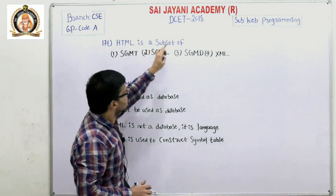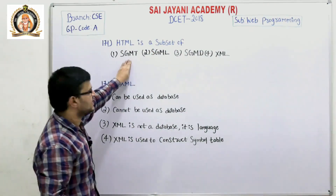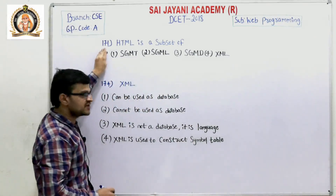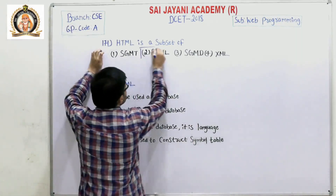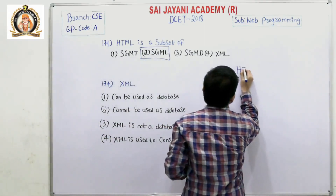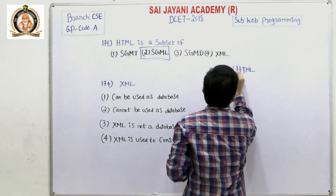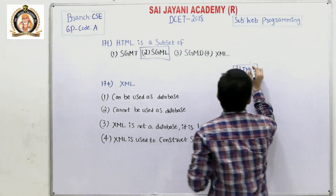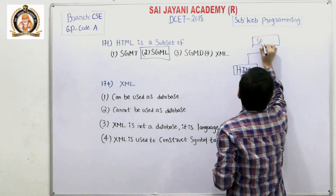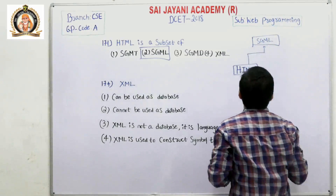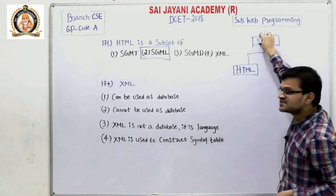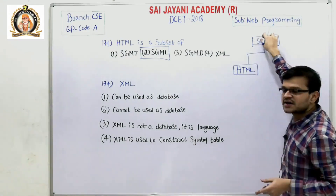HTML is a subset of — we have four options: SGML, HGML, HGMD, and XML. For question number 171, the second option, SGML, is the right answer. Why? Because HTML is a subset of SGML, where S represents Standard, G represents Generalized, M represents Markup, and L represents Language.